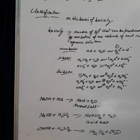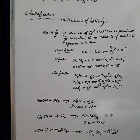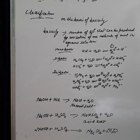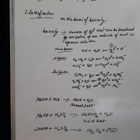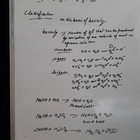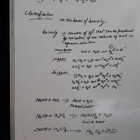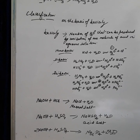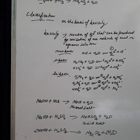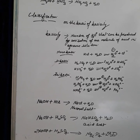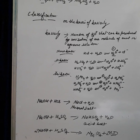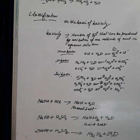Weak acids undergo partial ionization to produce a low concentration of hydronium ion — unlike strong acids, they do not undergo complete ionization. All organic acids are weak acids, including carbonic acid. The difference between strong and weak acid depends upon the degree of ionization: higher degree of ionization means strong acid, lower degree means weak acid.